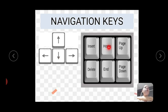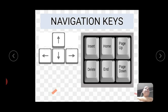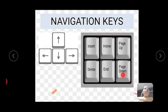Now here, the home key — pressing home key brings the cursor to the beginning of the line. End key brings the cursor to the end of the line. Page up moves you one page up, and page down moves you one page down.